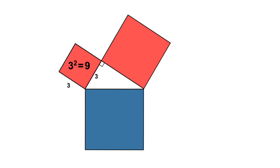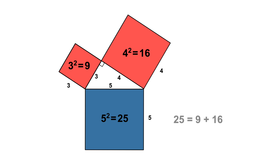The most common example is a 3×3 square, where the area is equal to 9 square units; a 4×4 square, where the area is equal to 16 square units; and a 5×5 square, where the area is equal to 25 square units. The area of the larger square, 25, is equal to the sum of the areas of the other two squares, which is 9 add 16. Notice that these three squares have formed a right-angled triangle in the middle, often referred to as a 3-4-5 triangle, where the sides are 3, 4, and 5 units respectively.